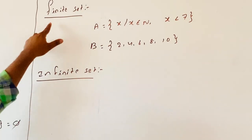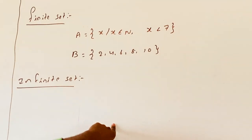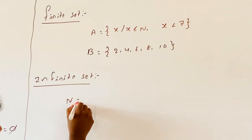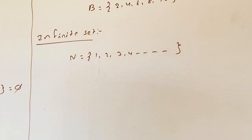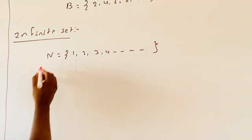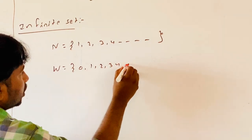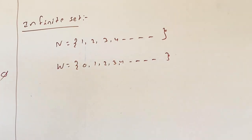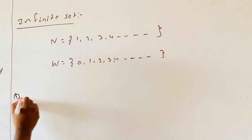The next type is an infinite set. A set which is not a finite set is called an infinite set. For example, the set of all natural numbers {1, 2, 3, 4, ...} and the set of whole numbers {0, 1, 2, 3, ...} are both infinite sets.